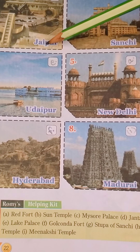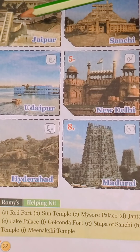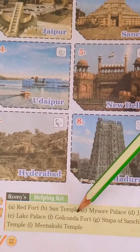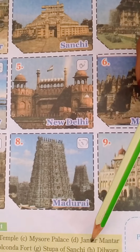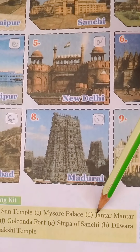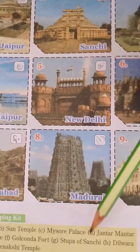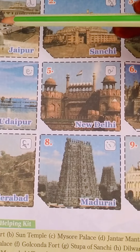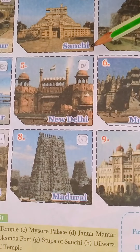This is Jaipur. Which is the famous monument? This is Jantar Mantra. Okay, this is the Jantar Mantra. Number 2, Sanchi.